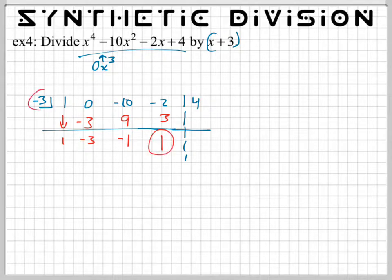What is 1 times negative 3? Negative 3. Negative 3. So your 1 is your remainder, and all these numbers give you your answer. Now I like to do it backwards. I say this is our constant, and then I say plus because it's positive.